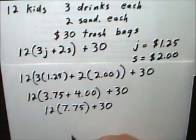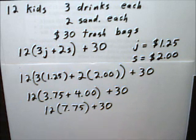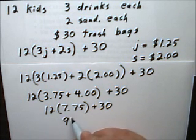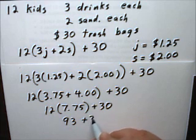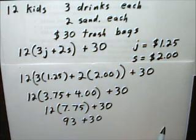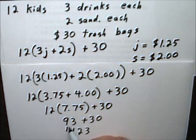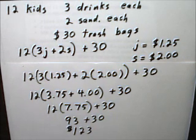If you do 12 times $7.75, that's $93. And $93 plus $30 is $123. This is what the sponsor is going to pay for this trash cleanup.